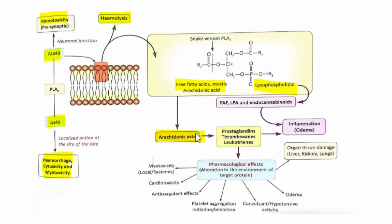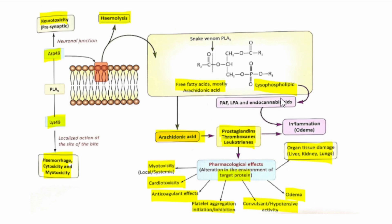Arachidonic acid is a precursor for the biosynthesis of several lipid mediators of inflammation, such as prostaglandins, thromboxanes, and leukotrienes, leading to alterations in the environment of target proteins. This causes myotoxicity, cardiotoxicity, anticoagulant effects, platelet aggregation effects, convulsions, hypertensive activity, edema, and ultimately organ and tissue damage to the liver, kidney, and lungs.